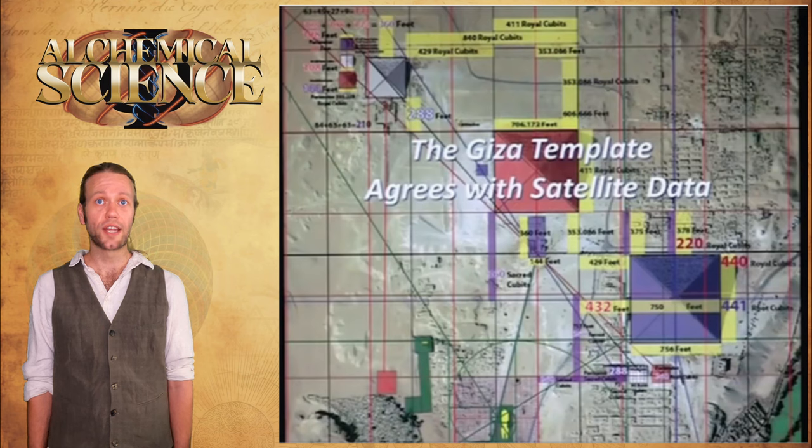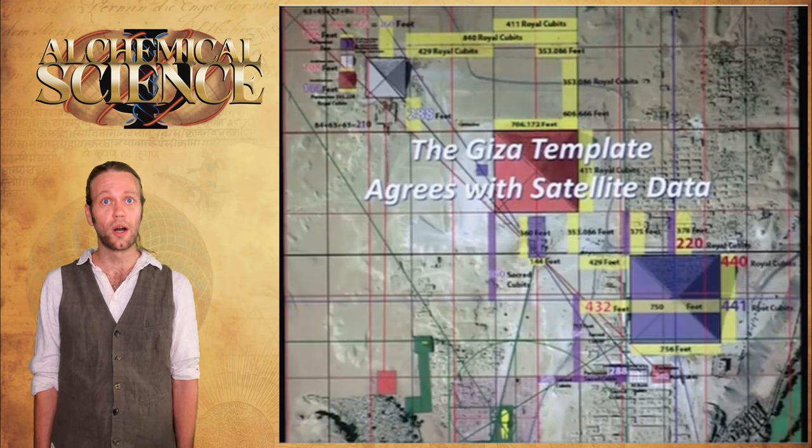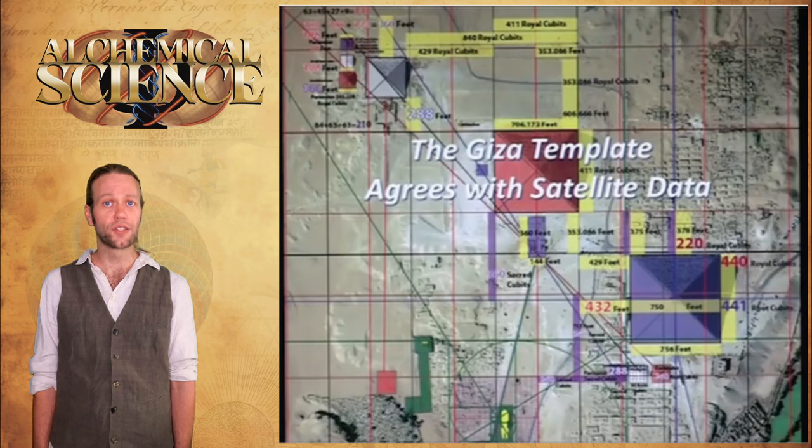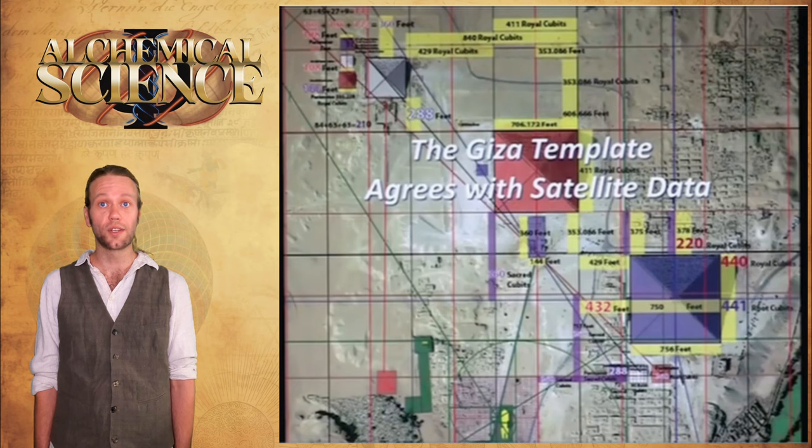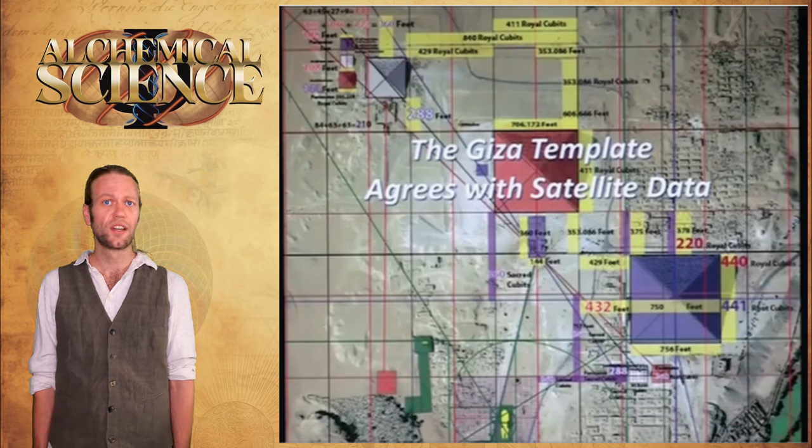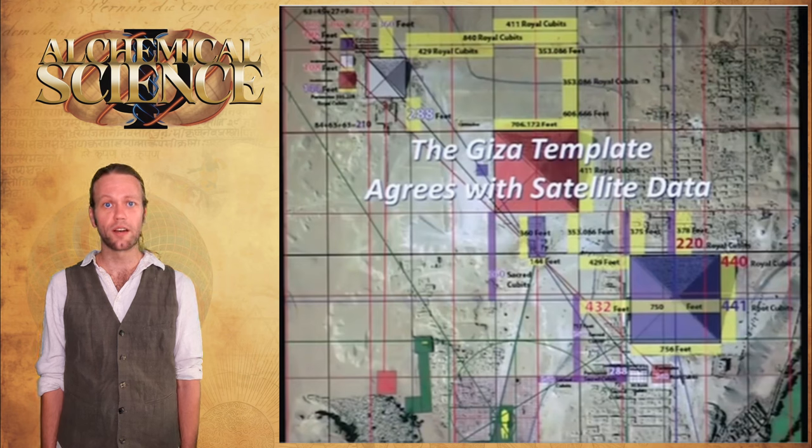Ed's also overlaid the template on Google Earth Pro, and accurately, and hopefully this is something that we can show sometime as well. This shows us another drop in the water to the extent of Ed's full decryption of our solar system's trajectory and the motions of other prominent celestial bodies such as Sirius, the Pleiades, and others using the template that he's recovered from Giza.